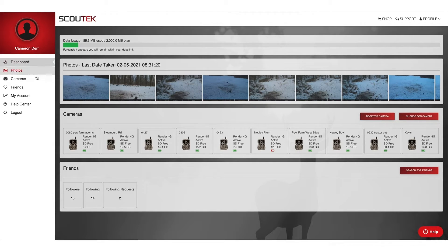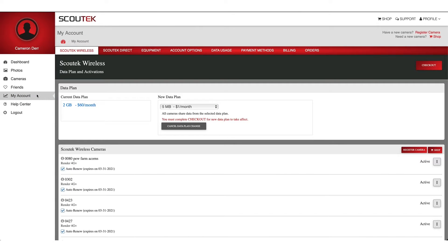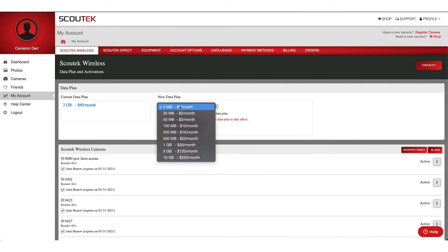If you're creeping in towards the end of the month and you think you're going to go over, you can simply up your data plan and only pay the difference. So you're not getting double charged, but it's super important to understand how many photos you're getting with your data.